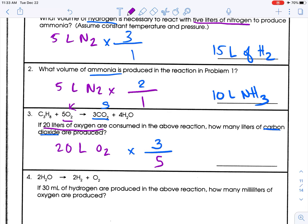So 20 times 3. Hold on a second. I don't want to do this and then get a silly math error. So 20 times 3 is 60, divided by 5 is 12. This is 12 liters of CO2.